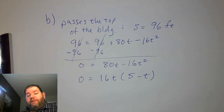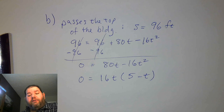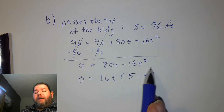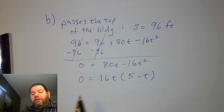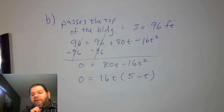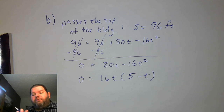So we have 16t times 5 minus t. If we wanted to, we could switch the order of the terms to negative 16t squared plus 80t — either way is fine here because it doesn't affect the outcome. When we have a trinomial we don't want a negative t squared because it makes factoring into two binomials more difficult.